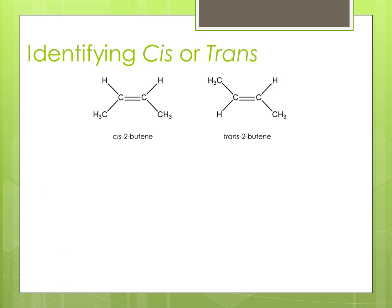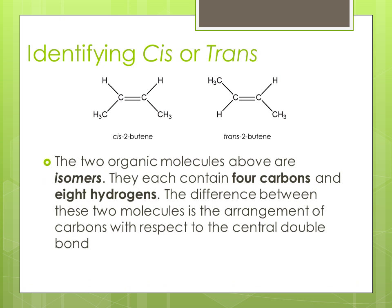Identifying cis or trans. The two organic molecules above are isomers. They each contain four carbons and eight hydrogens. The difference between these two molecules is the arrangement of carbons with respect to the central double bond.